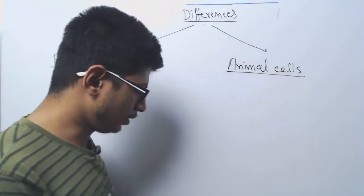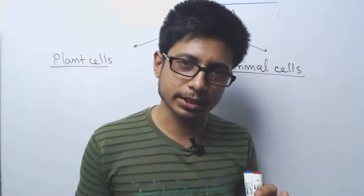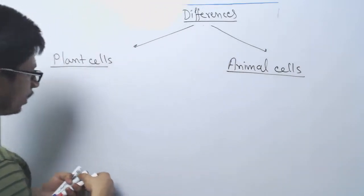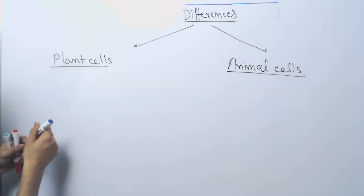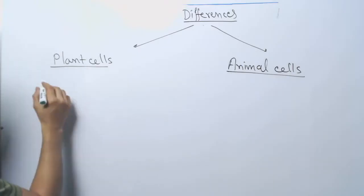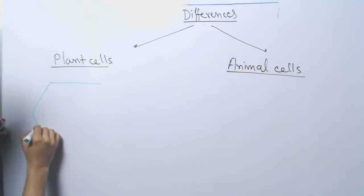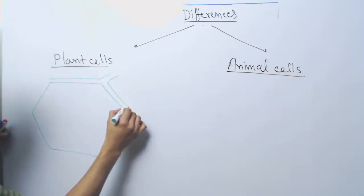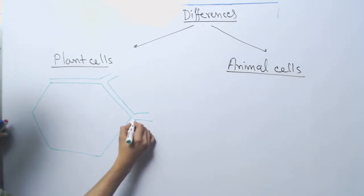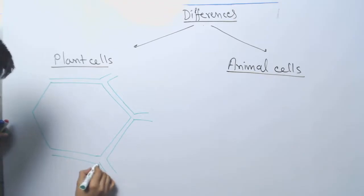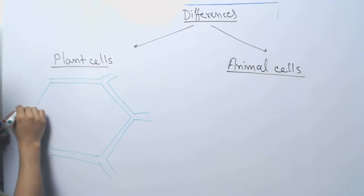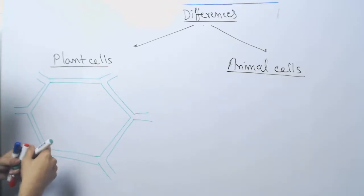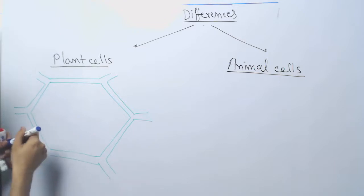I'm going to draw two structures that will tell you a lot more about the differences together. Let me draw the plant cell first — I'll draw it with a green coloration because it feels like a plant. This is the cell wall I'm drawing. This is the plant cell structure; it's quite different. Let me also draw the cytoplasm, the nucleus, and other components.